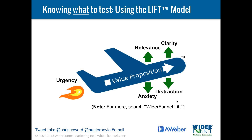Then we look at factors that reduce conversion rates: anxiety — anything that creates uncertainty in the prospect's mind about taking action; and distraction — anything that redirects attention from the primary message or call to action. Then urgency: why should I act now? You can test urgency with offers and limited time, but also the tone of the presentation can impact urgency. These six factors are viewed from the perspective of the visitor.